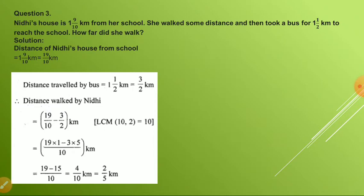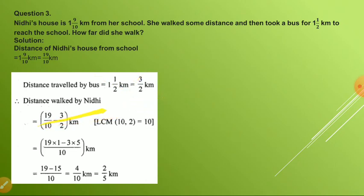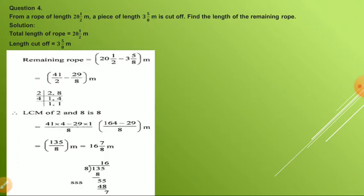The same case applies here. The total distance is 1 whole 9/10, which as an improper fraction is 19/10 kilometers. The distance traveled by bus is 1 whole 1/2, which is 3/2 kilometers. So the distance walked by Nidhi will be 19/10 minus 3/2. By solving this, you will get 2/5 kilometer.